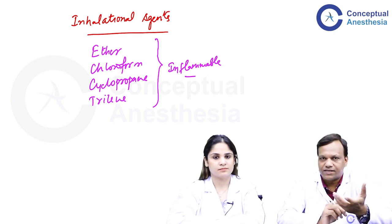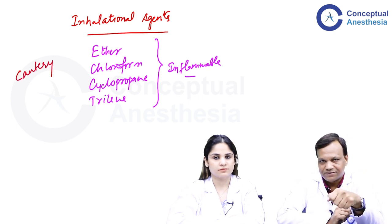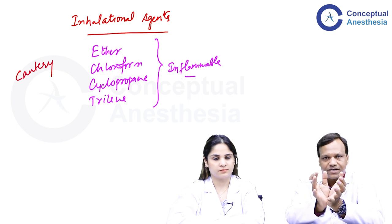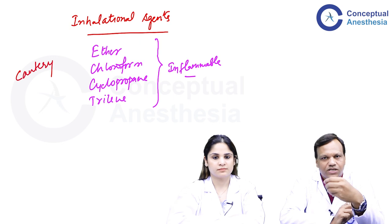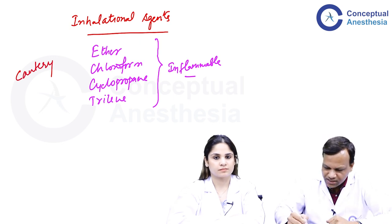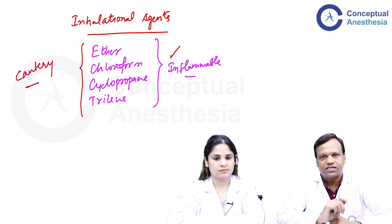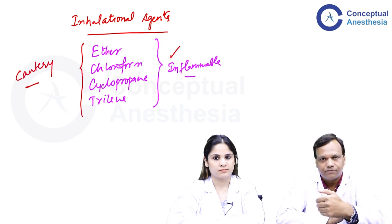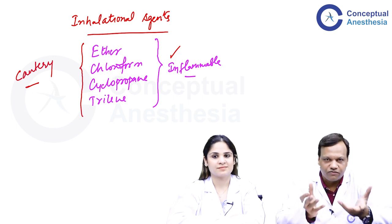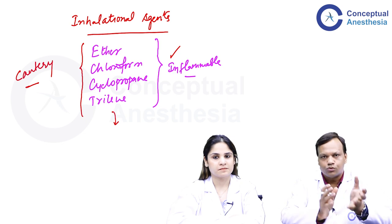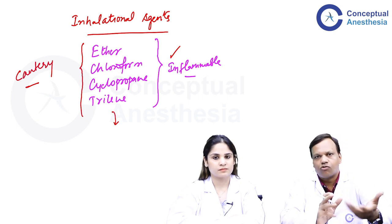We devised a method known as cautery — we simply apply heat at the point where bleeding is occurring. Whichever blood vessel is broken coagulates with the heat, stopping the bleeding. The problem with those old agents was we could not do cautery while using them. If we applied cautery, the bleeding would stop but an explosion would occur. So whenever those agents were used, there was a lot of blood loss and surgeries were quite prolonged.